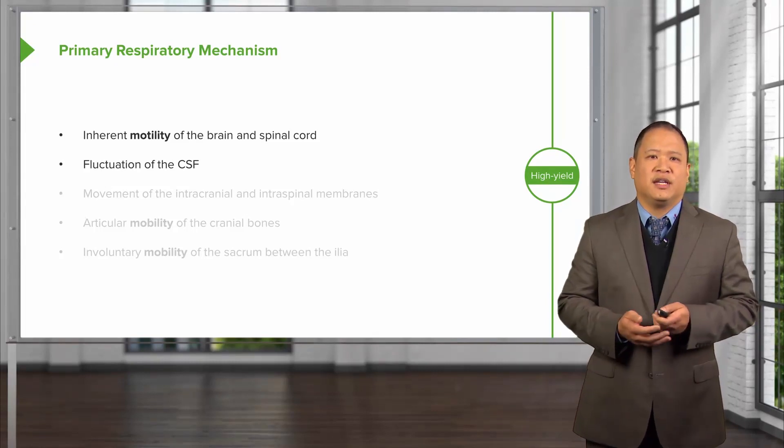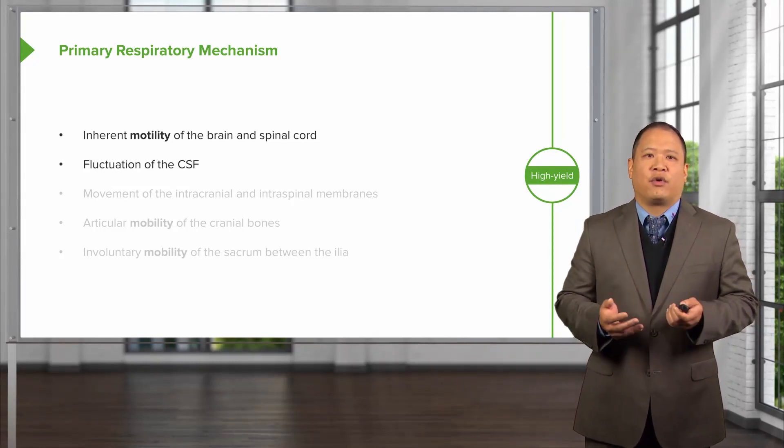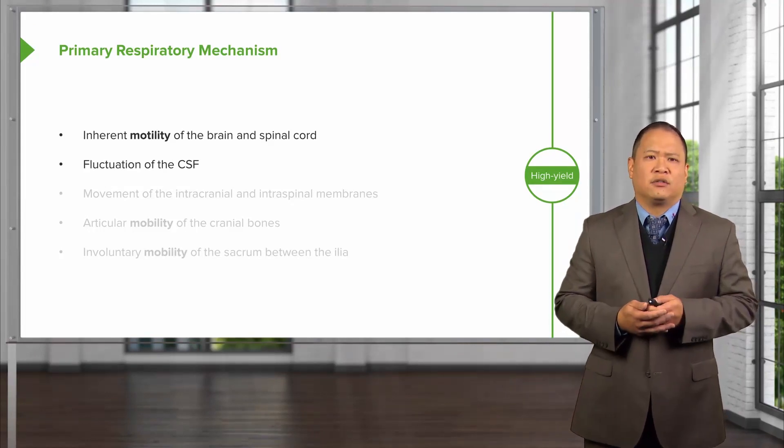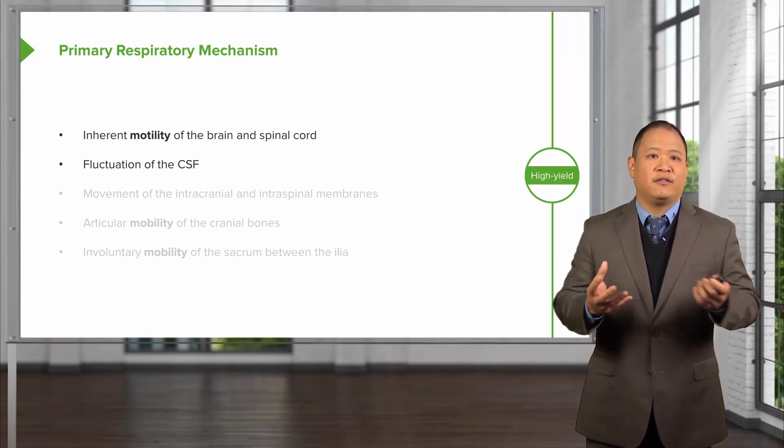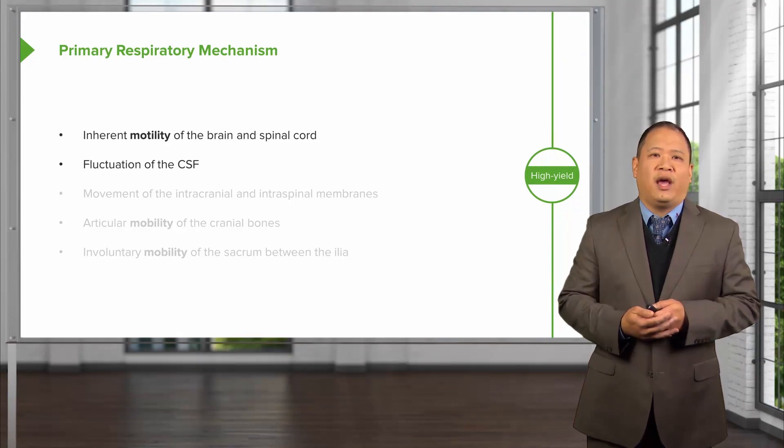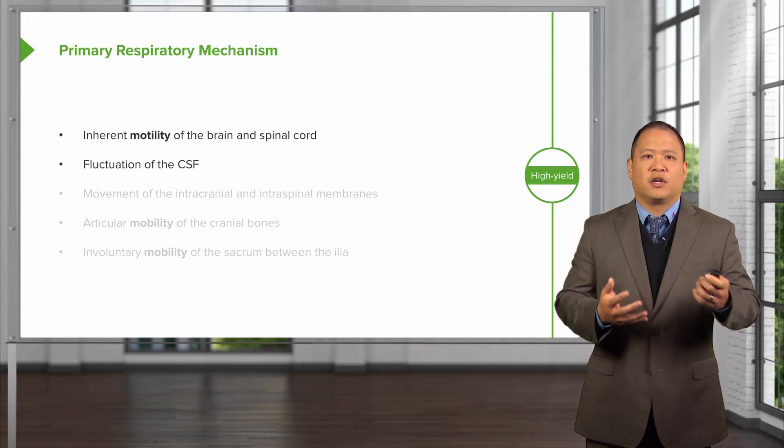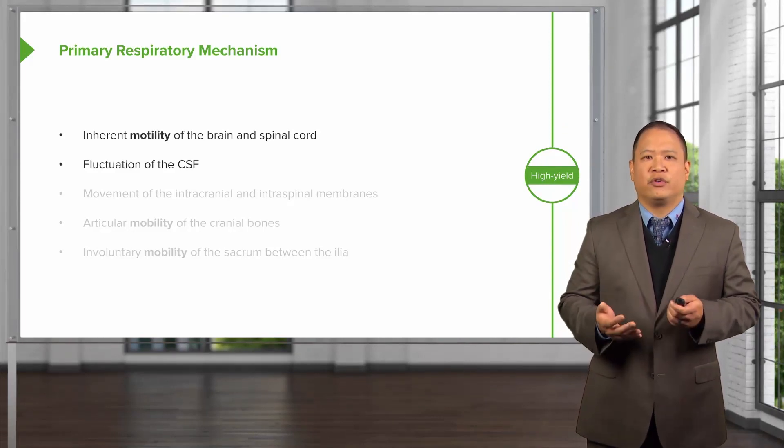There's a fluctuation of the CSF. There is no direct blood flow of the central nervous system. The cerebral spinal fluid bathes the brain and the spinal cord. For motion and movement of the fluid there, there's a certain fluctuation that allows for transport of nutrients and waste.